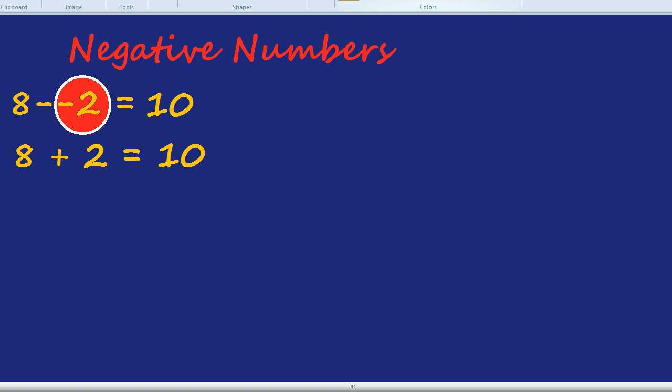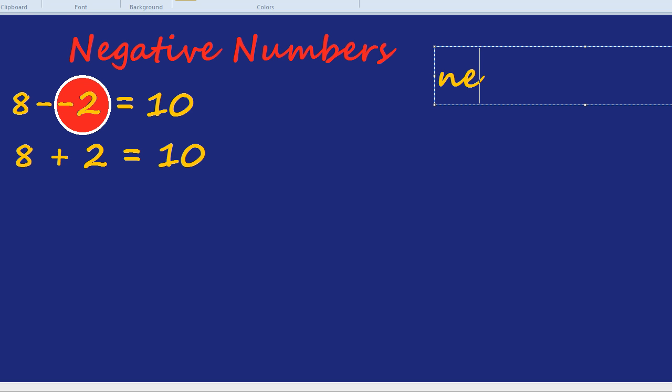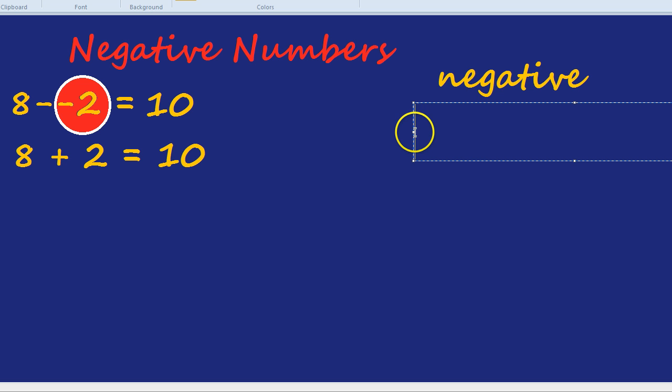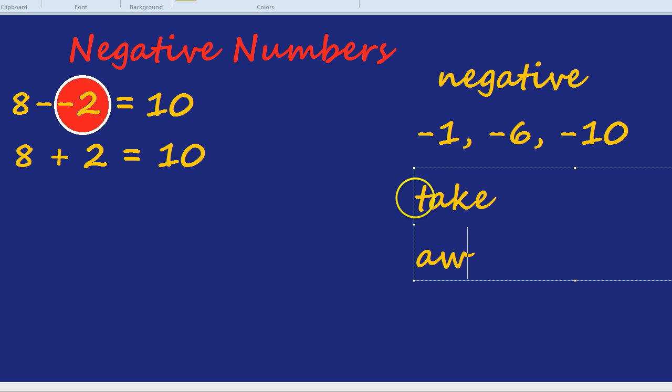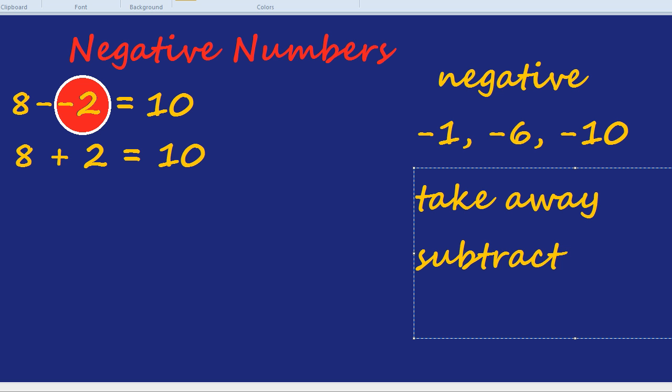Just a quick note on word usage. You may have wondered what the difference is between negative and taking away. Negative we tend to use for the numbers itself. So for example, negative 1, negative 6, negative 10. Whereas the actual operation of getting rid of something, we call take away, subtract, we shouldn't confuse take away with the meal, of course. Subtract and minus.